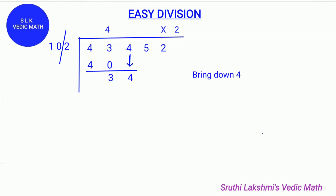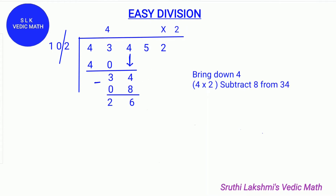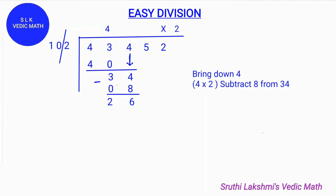Then bring down 4. Next, do the last digit of the quotient multiplied with the last digit of the divisor: 4 times 2 is 8. So we do 34 minus 8, which gives us 26.